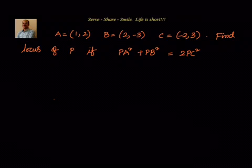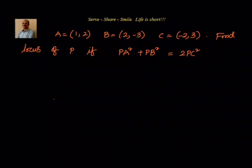A is a point with coordinates 1 comma 2, B is a point with coordinates 2 comma minus 3, C is minus 2 comma 3. Find the locus of P if PA square plus PB square equals 2PC square. We have to find out the locus of P. We have been given the coordinates of A, B and C.